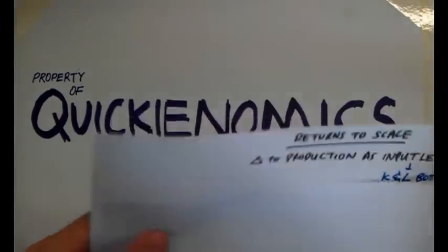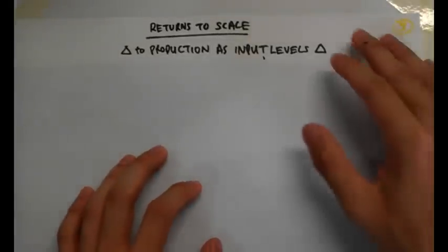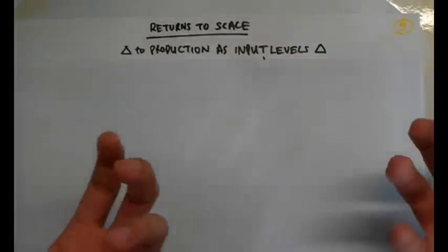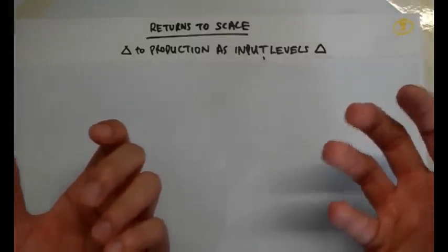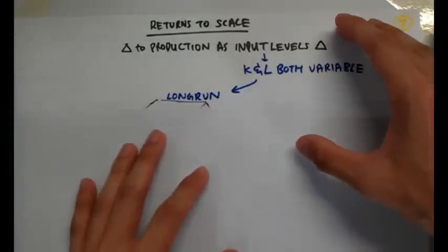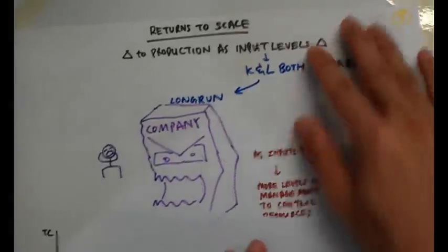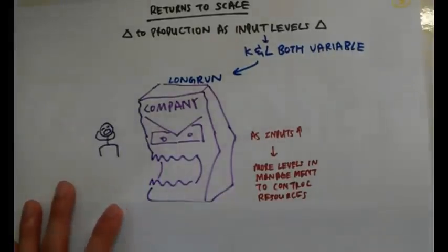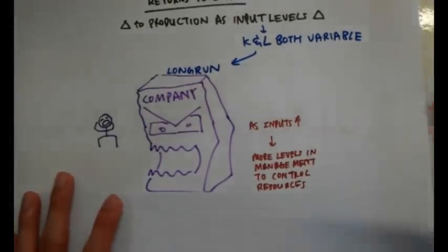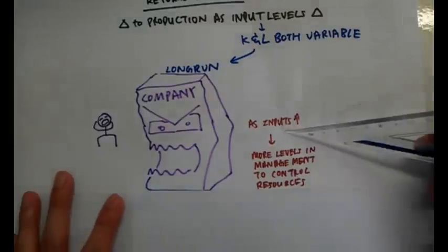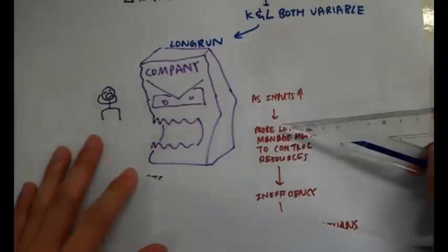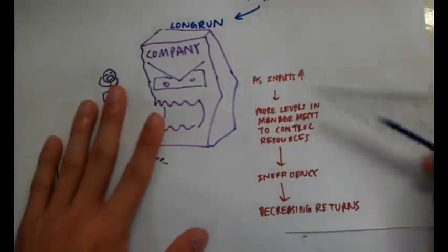Returns to scale is the same thing but now we're talking about the long run. I can increase my capital and my labor at the same time, so why would I experience the same thing? The theory says that in the long run, the company gets too big, it gets too big that it's hard to manage. Since it's hard to manage, you will be less productive as you produce more units. As the inputs increase, more levels in management are required to control the resources. Therefore, it leads to inefficiency and decreasing returns.